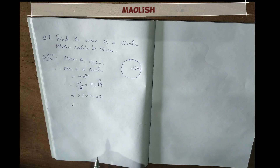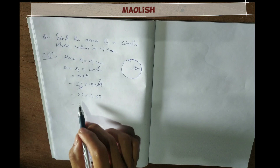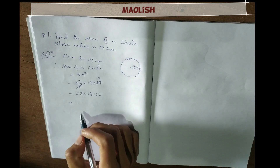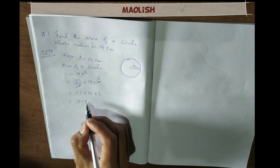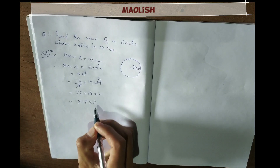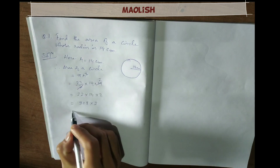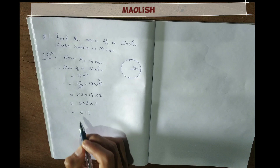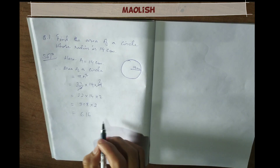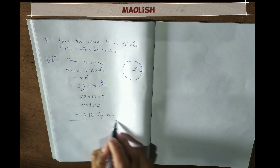Now multiply — first 22 and 14, multiply them together. The answer is 616 square centimeters.